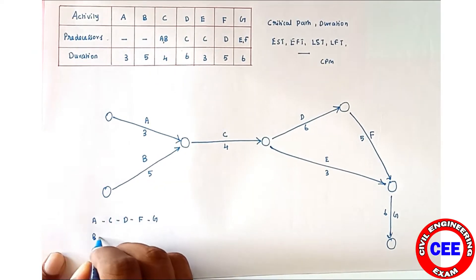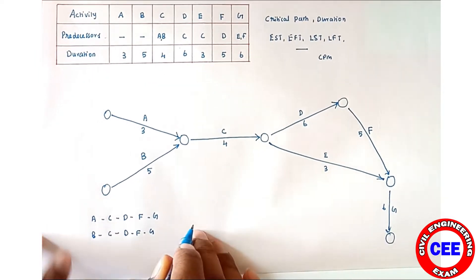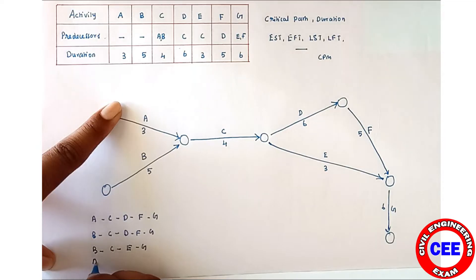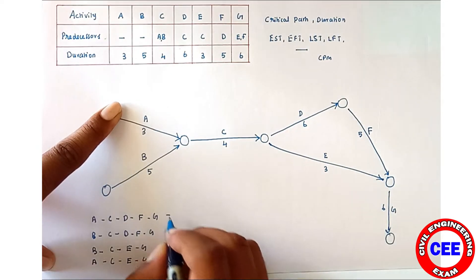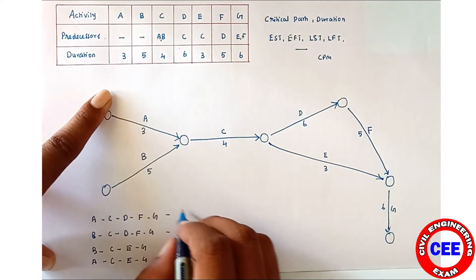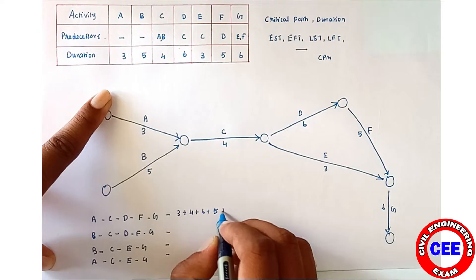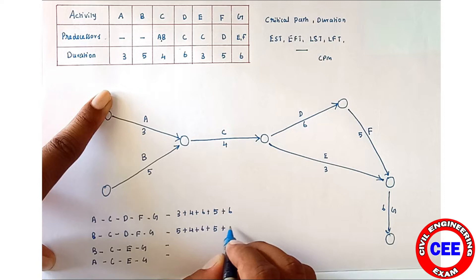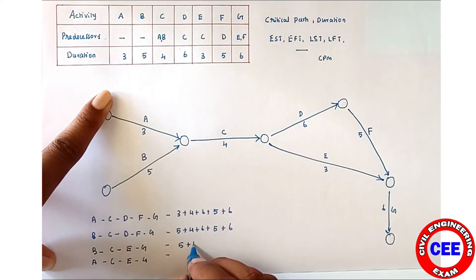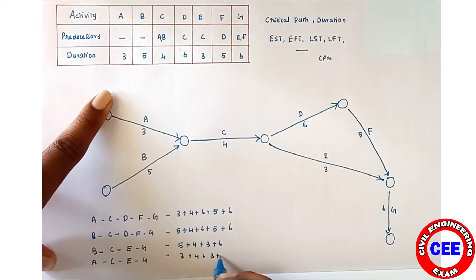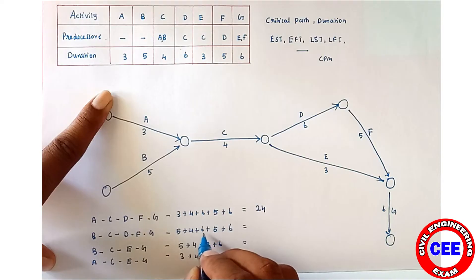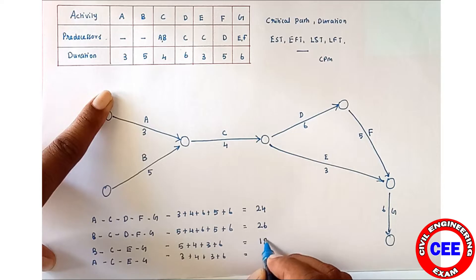The next path is B–C–D–F–G. Then B–C–E–G, and A–C–E–G. The corresponding durations are: A–C–D–F–G: 3+4+6+5+6 = 24. B–C–D–F–G: 5+4+6+5+6 = 26. B–C–E–G: 5+4+3+6 = 18. A–C–E–G: 3+4+3+6 = 16.